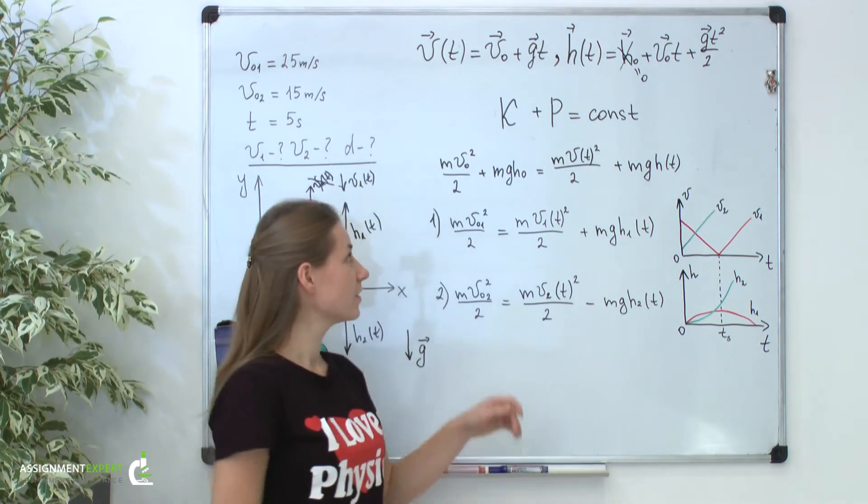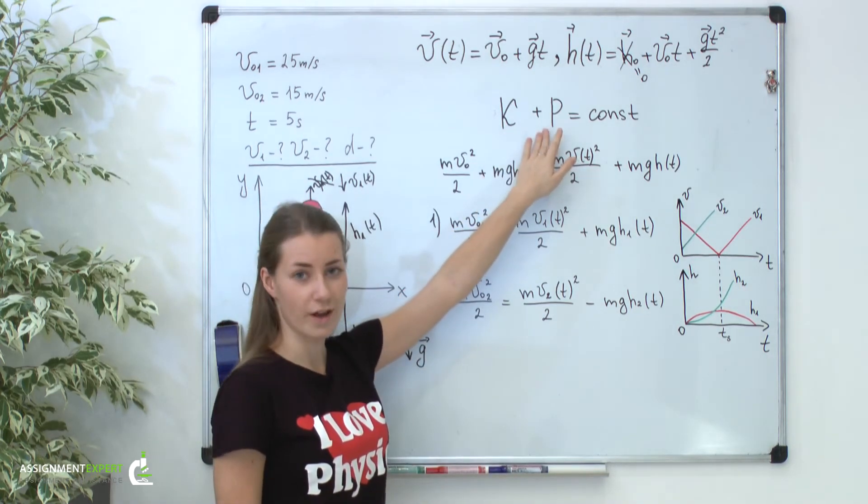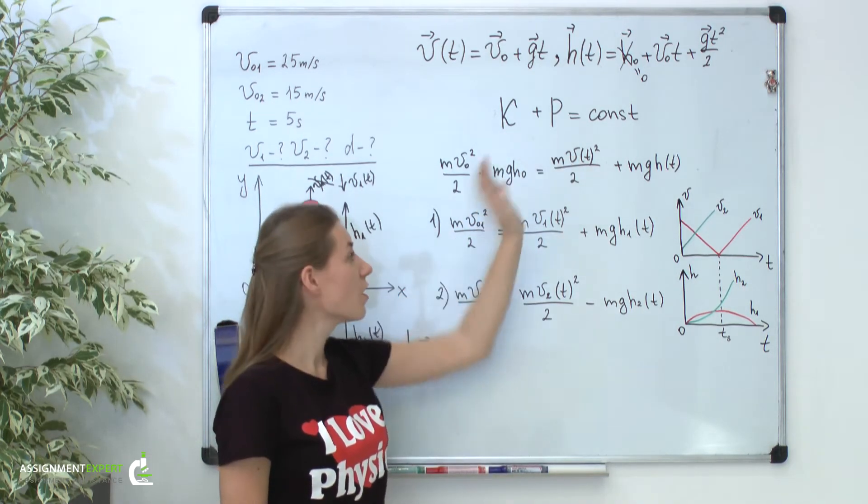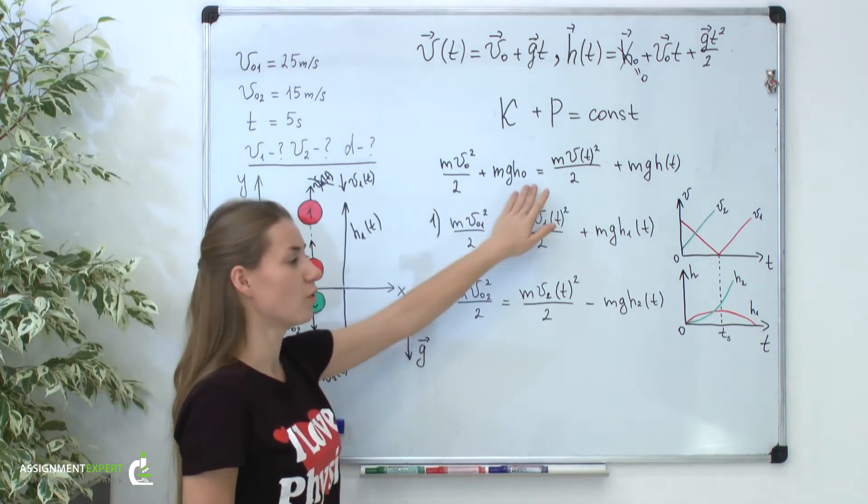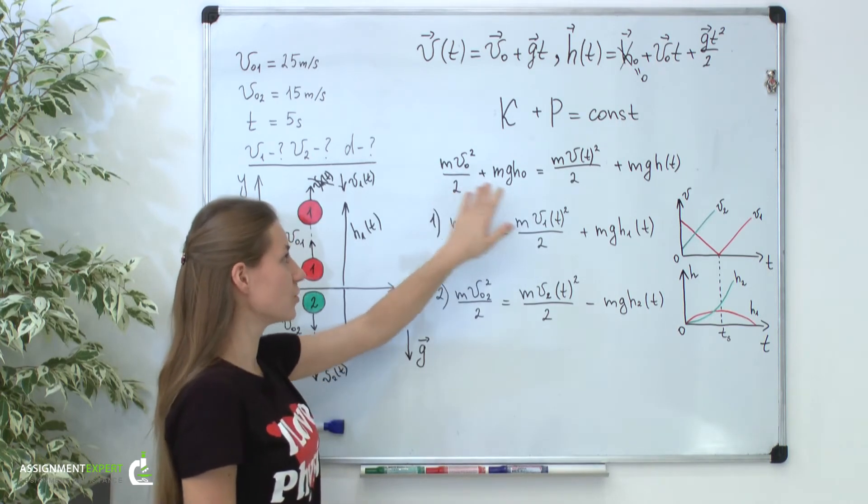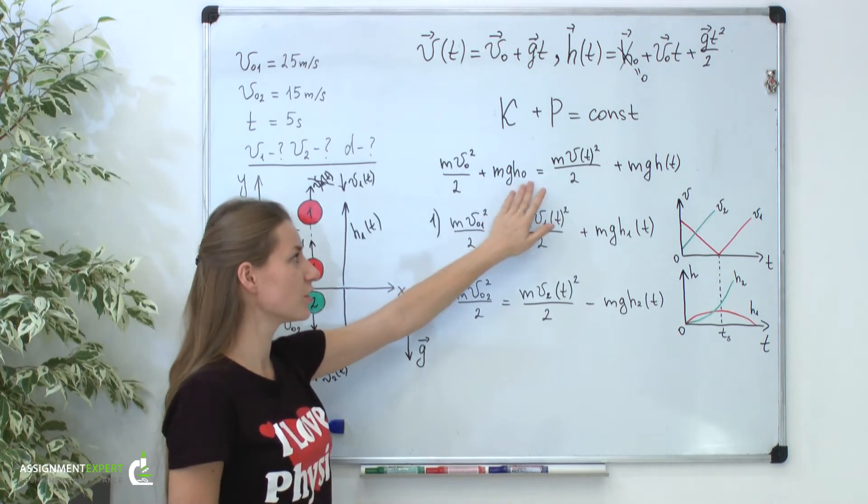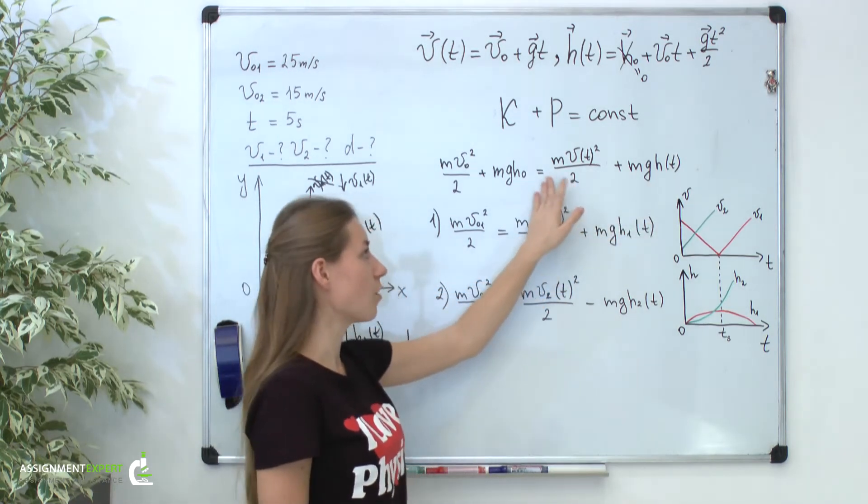All in all, the energy conservation law states that the sum of kinetic and potential energy remains constant. For the system of our two balls it means that we will have the following equation. The initial kinetic energy plus initial potential energy equals kinetic energy and potential energy after the moment of the throw.